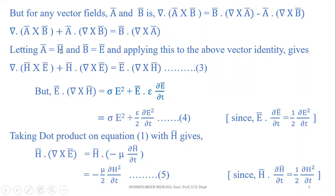Assuming A̅ is the magnetic field H̅ and B̅ is the electric field E̅, and applying the vector identity, we get: ∇ · (H̅ × E̅) + H̅ · (∇ × E̅) = E̅ · (∇ × H̅), treating this as equation 3. But E̅ · (∇ × H̅) = σ E² + E̅ · ε ∂E̅/∂t, which also equals σ E² + (ε/2) ∂E²/∂t. This is equation 4.